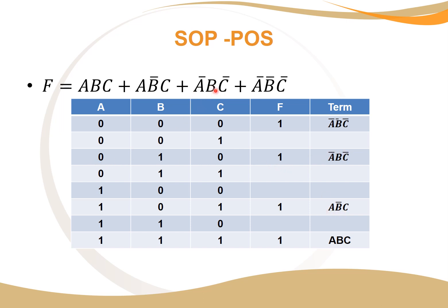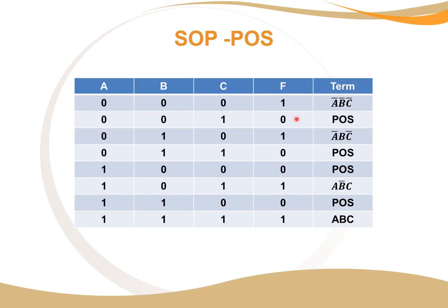For A-not, B, and C-not: if A is zero, B is one, and C is zero, then our expression is one — zero becomes one, one stays one, zero becomes one, so this is all one. For A-not, B-not, C-not: if A is zero, B is zero, and C is zero, our term is one. Now we've filled in our SOP into our truth table. The next step is to fill in all the other open spaces as zeros, and that then gives us our POS.